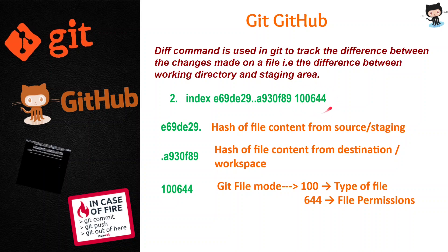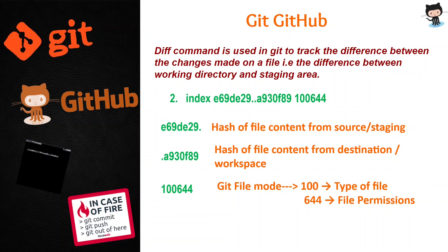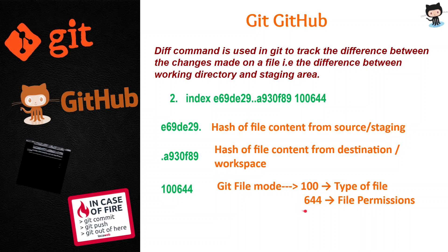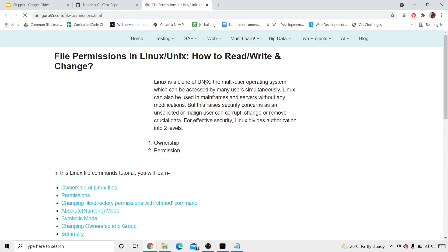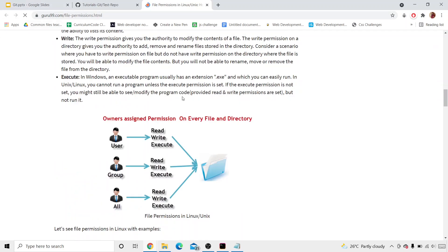The third part is the file mode number. Here, 100 is the file type — for .txt files, 100 is used. If we had a Python file, HTML file, or different file types, we'd have different file mode numbers. After 100, we have 644 — these are basically the file permissions. When you have a file in a company, you want some rights given to an employer at the middle level and some permissions given to the employee at the lower level.